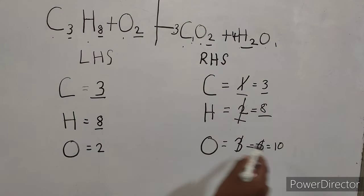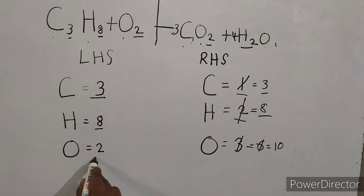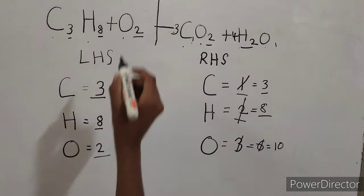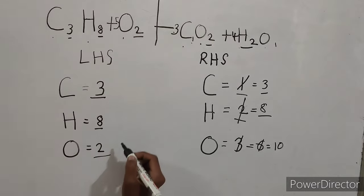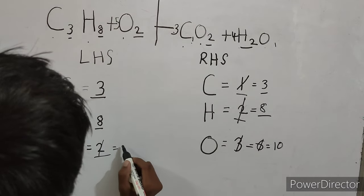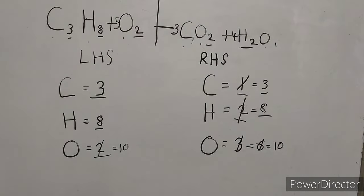Now this side we have to balance the oxygen. So here it is 2 and there it is 10. So if we write 5 here, 5 times 2 is 10. I think we have understood this concept now.